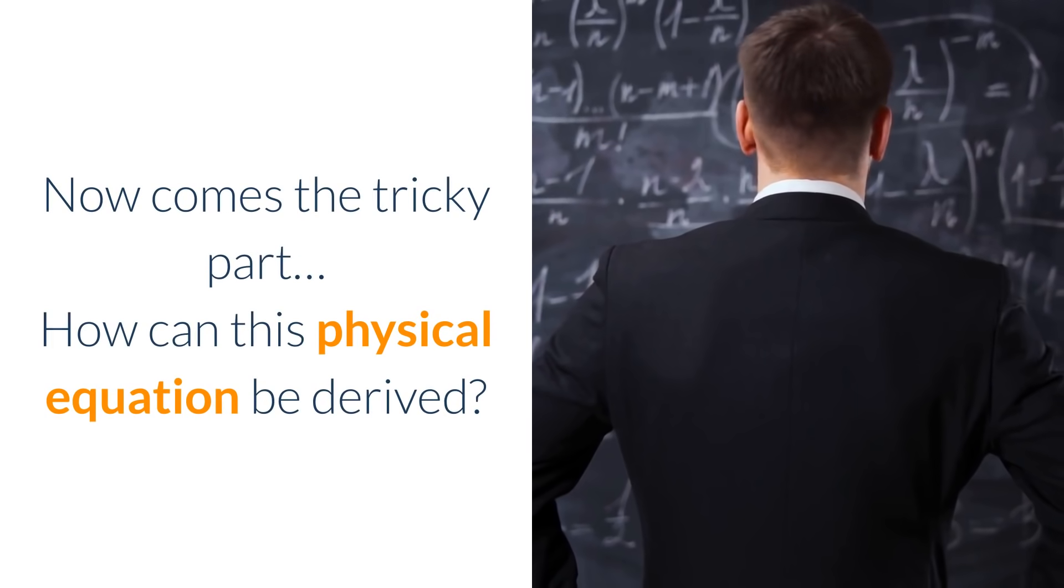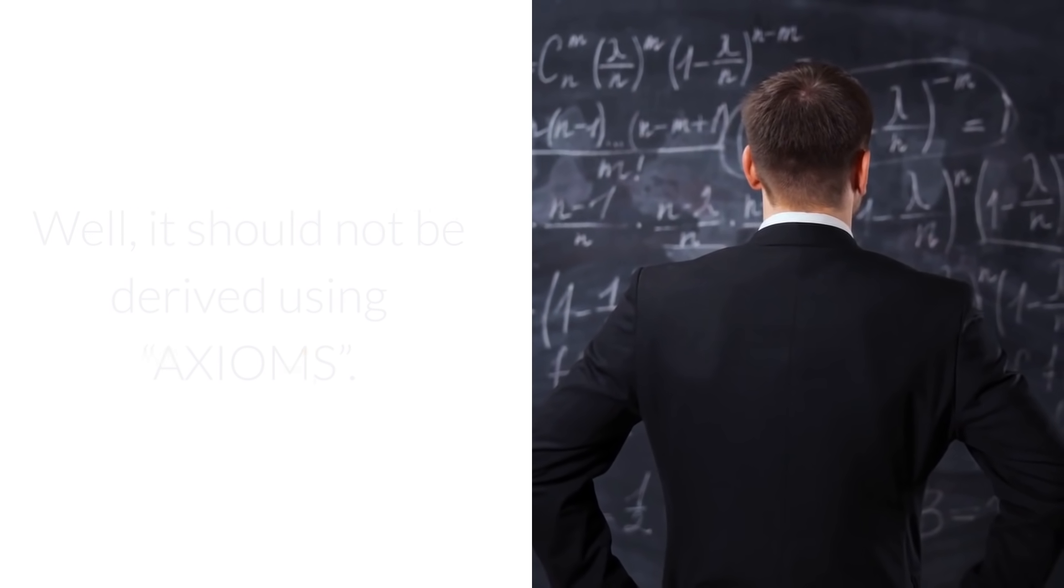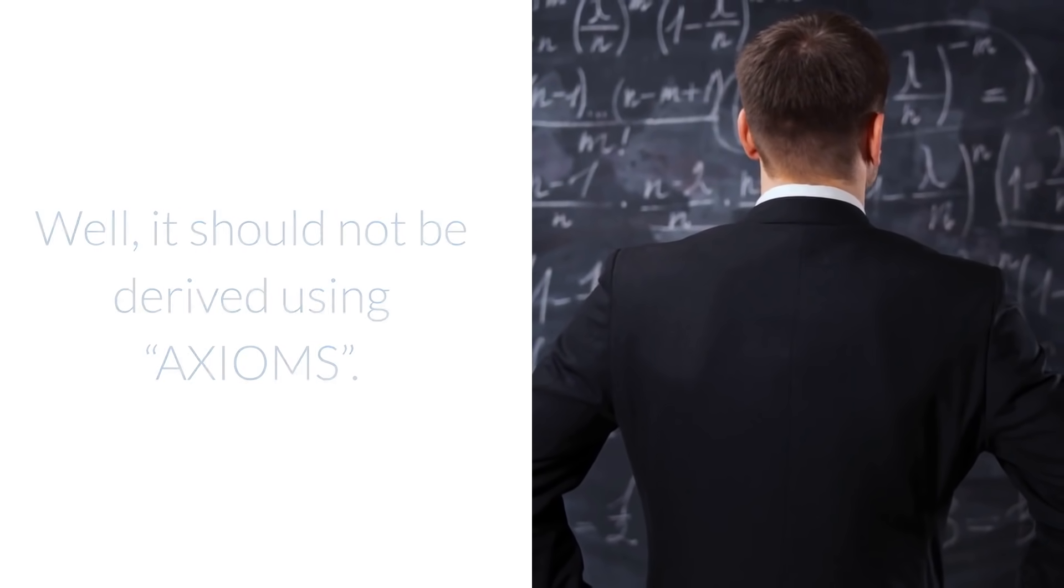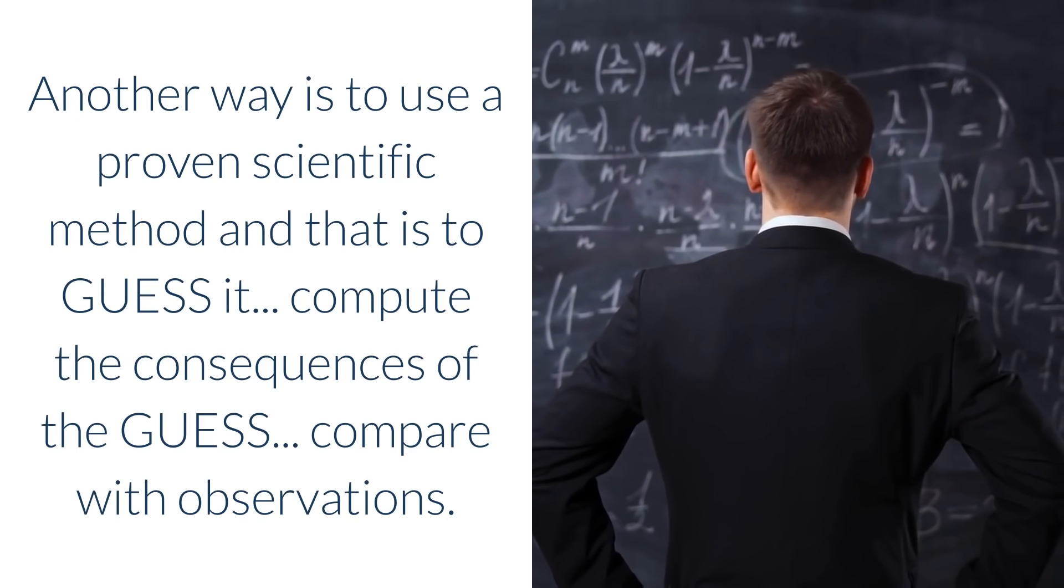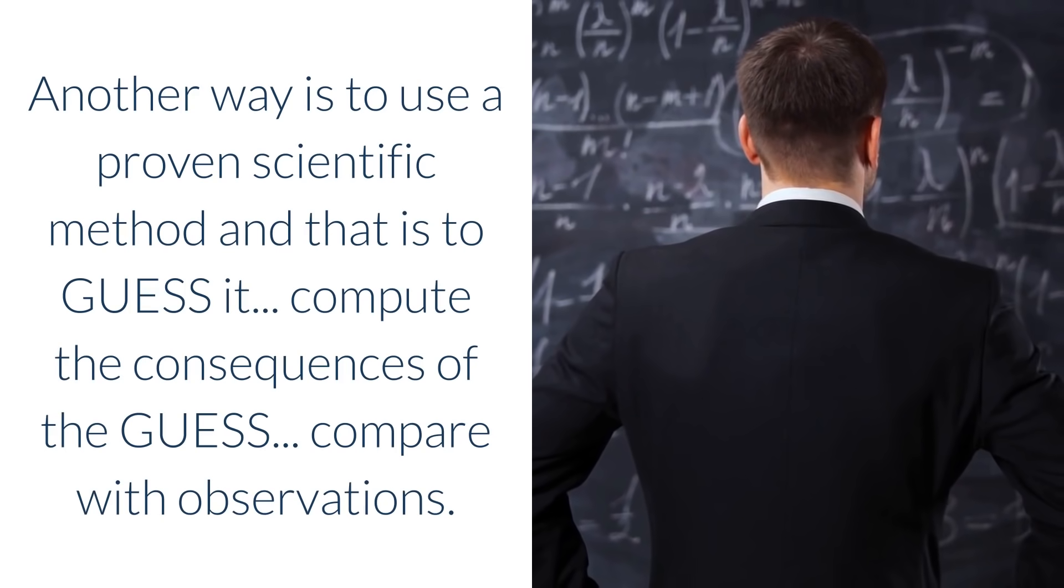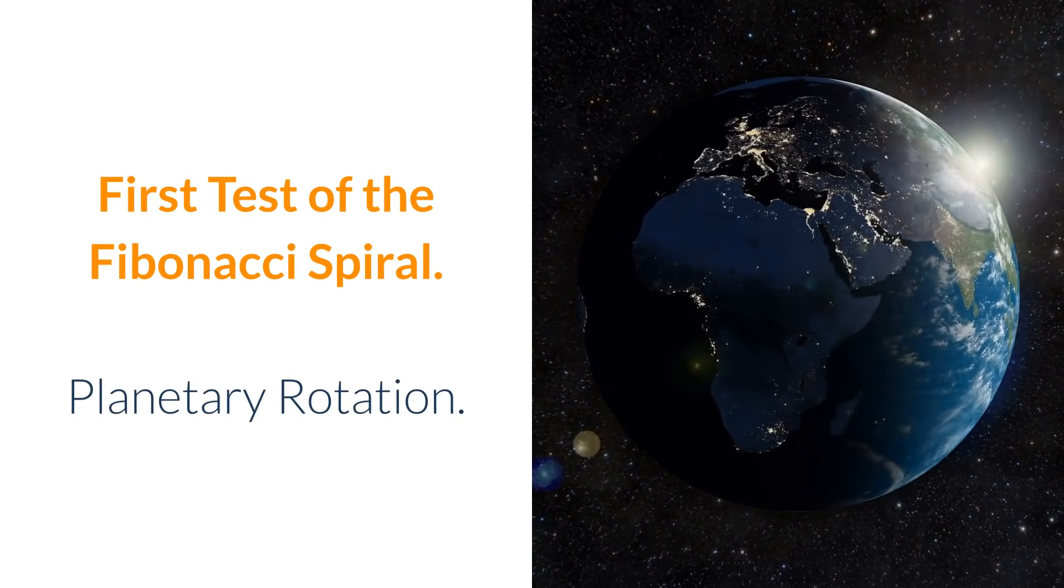Now comes the tricky part. How can this physical equation be derived? Well, it should not be derived using axioms. Another way is to use a proven scientific method and that is to guess it. Compute the consequences of the guess. Compare with observations. First test of the Fibonacci Spiral: Planetary rotation.